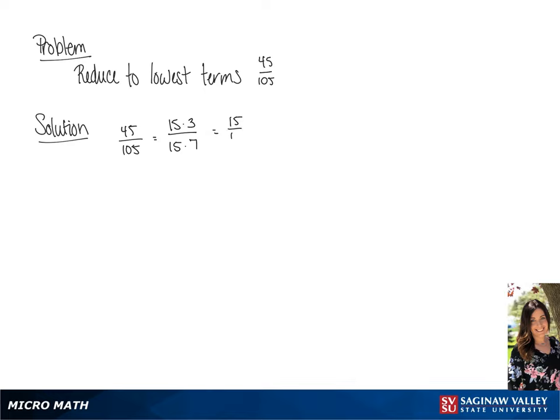This gives us 15 over 15 times 3 over 7. Since 15 over 15 is 1, we'll get our answer of 3 over 7.